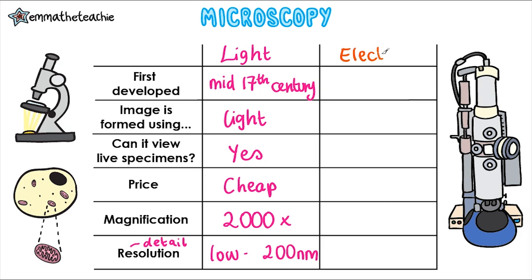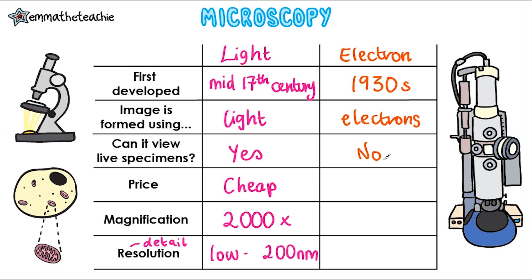Now let's look at the electron microscope. It was developed by scientists in the 1930s, and it uses electrons to form an image. It does this by firing electrons through the specimen, which means that the specimens must be dead first, so it can't be used to view living specimens. It's a very expensive microscope, and it has a lot of conditions that it needs to be kept under.